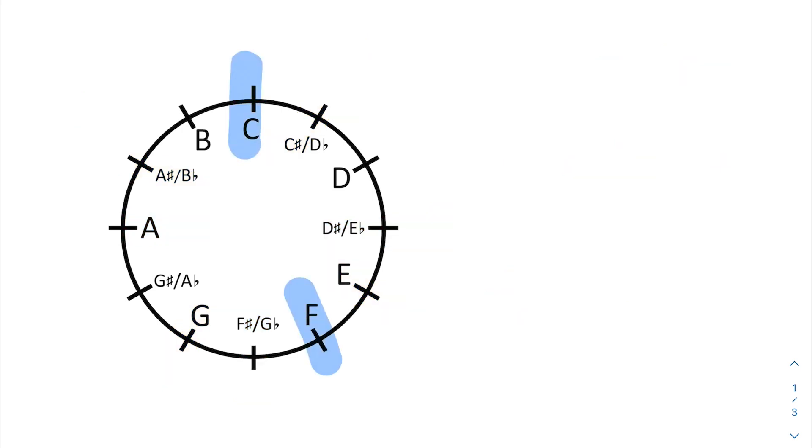And one last fun one. Here I have the C sus 4. If, instead, this F was the root, this could be like an F sus 2. You can see, really, it's the same chord, just which one's going to be the root. Is it going to be the F or the C?